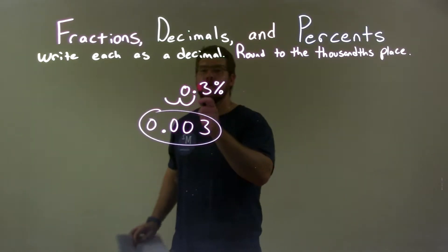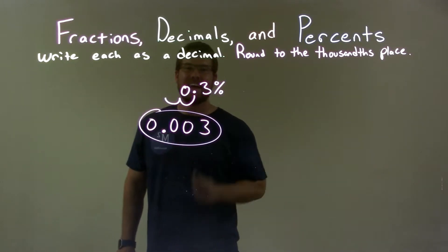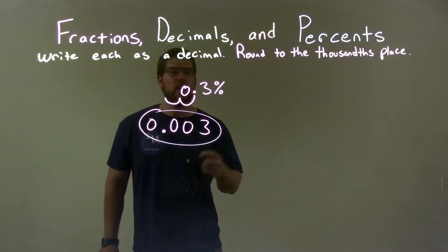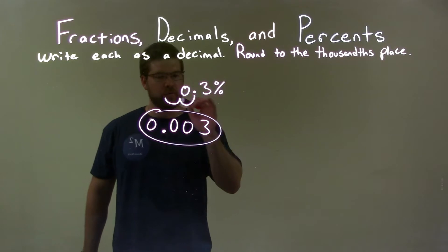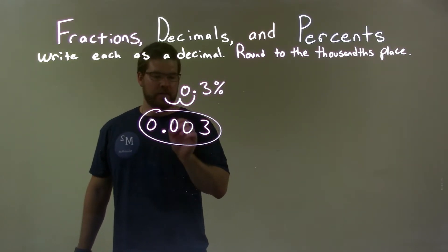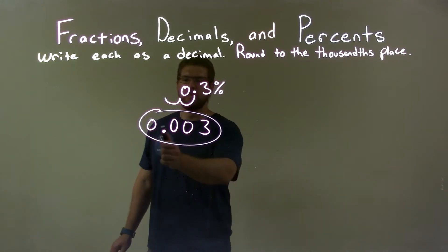So quick recap. We're given 0.3% and we need to write that as a decimal. We took this decimal point here, moved it two spots to the left which created an extra zero. And so our final answer is 0.003.